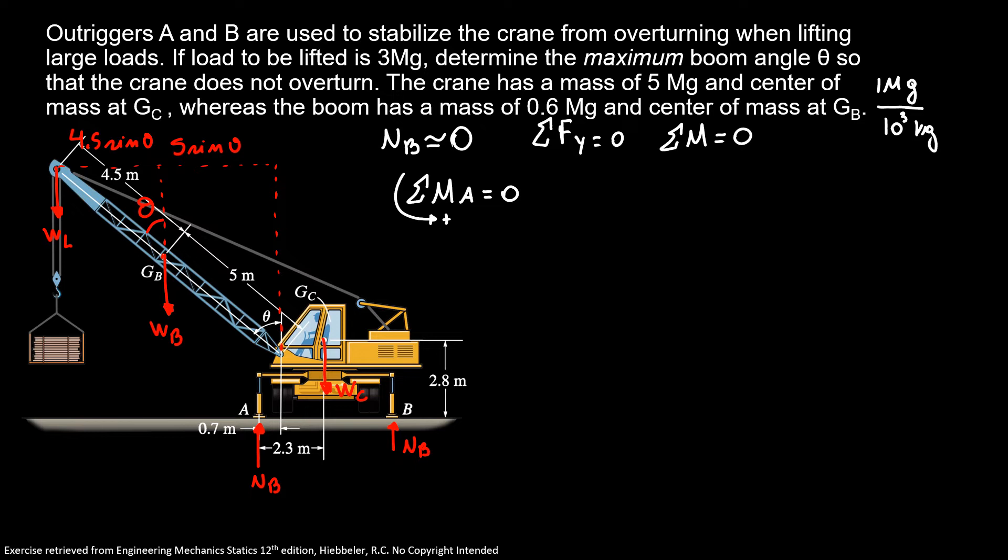So now we're gonna start with the force, the weight of the crane, with a minus sign because I'm going clockwise, times 2.3. That's my distance. Plus the weight of the boom times my distance. That's five sine theta minus 0.7 because we are using A as reference. So this distance here is 0.7 as the image shows. Plus the weight of the load times 9.5 sine theta minus 0.7 is equal zero.